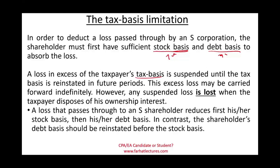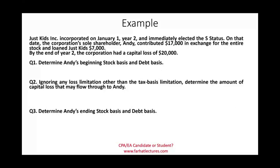A loss that passes through to an S shareholder reduces first their stock basis, then their debt basis. In contrast, when reinstating, you first reinstate the debt basis and then the stock basis. On the way down, you knock out the stock basis first; once that's done you start reducing the debt basis. On the way back up, you first reinstate your debt basis by paying back the debt, then you reinstate your stock basis.